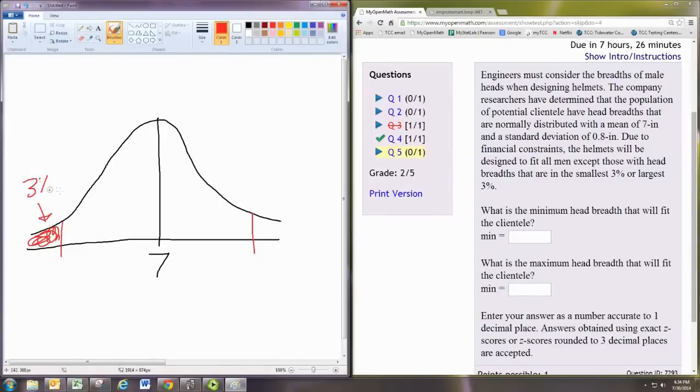Because if we made those helmets that small and that large, nobody would really be buying them. There's not enough people there. And so, we don't sell enough of those to really make it worthwhile to make them. That leaves the middle 94%, right? 6% in the tails.